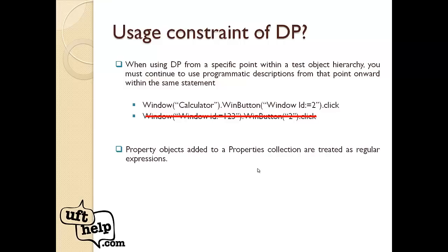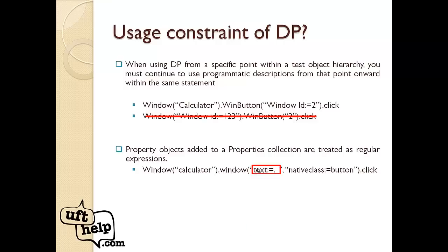The rule is: you can move from object repository to DP, but once you switch to DP, you cannot move back to the object repository — you must continue with DP. The second limitation is that property name values are treated as regular expressions. For example, clicking the dot '.' button on a calculator using text property colon-equals '.' will cause an error because '.' is interpreted as a regex wildcard. To avoid this, use a backslash before the dot.